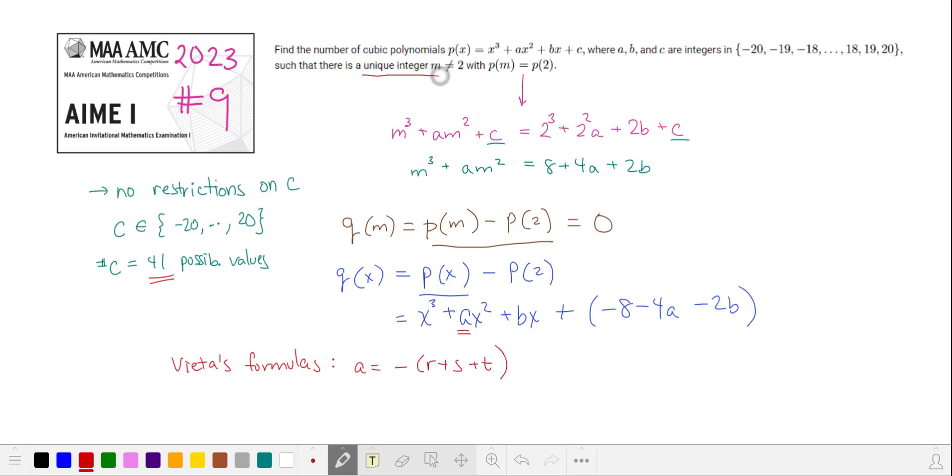In the problem statement, we're given that m is an integer, and so is 2, and we're given that A is an integer. And since m is one of these three roots, then our third root is also an integer.